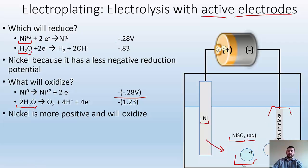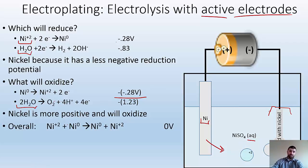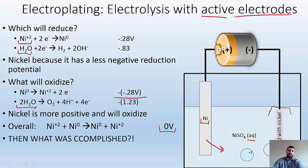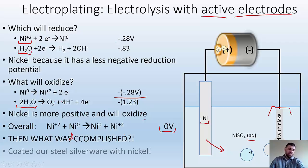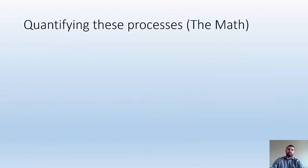So overall, we have nickel ion and nickel metal becoming nickel metal and nickel ion. The net reaction voltage is zero — it doesn't make sense spontaneously, but we're making it happen. What was accomplished? We coated our steel silverware with nickel. Pretty cool.